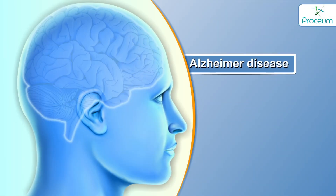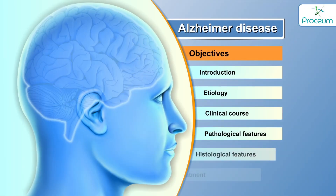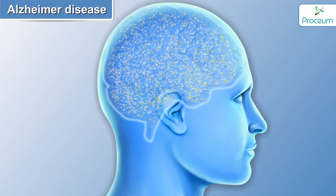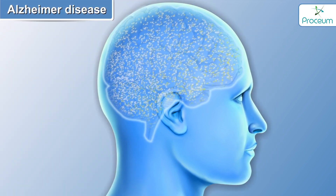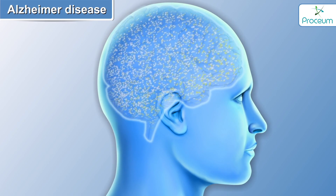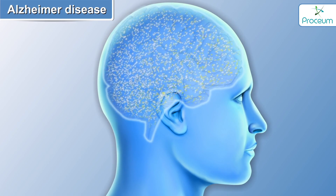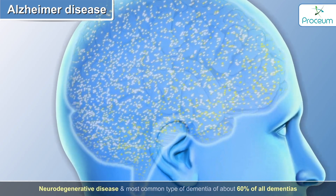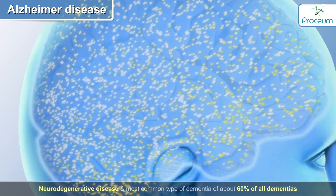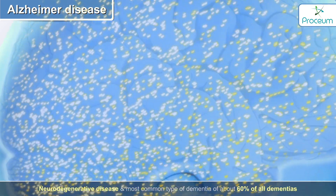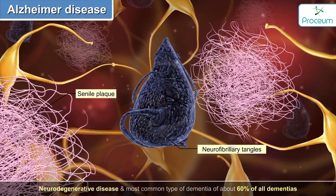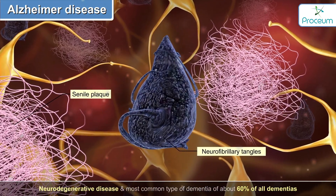Alzheimer's disease. Hi folks, in this video we'll be discussing about Alzheimer's disease. Alzheimer's disease is a neurodegenerative disease and is the most common type of dementia, covering about 60% of all dementias.